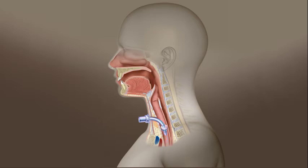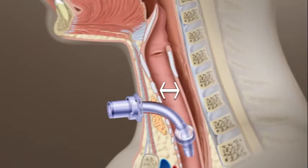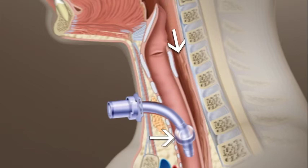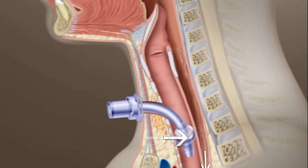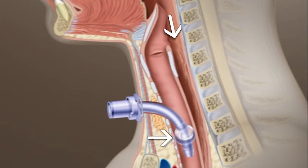A tracheotomy may also impair swallowing, although typically not severely. It can impair swallowing by preventing the larynx from rising during the swallow. The second way it affects swallowing is by changing the pressure inside and outside the throat. It can also put pressure on the esophagus and make it difficult for food to pass through, usually more significantly if the cuff is inflated.